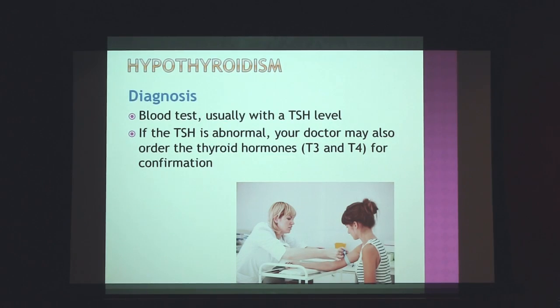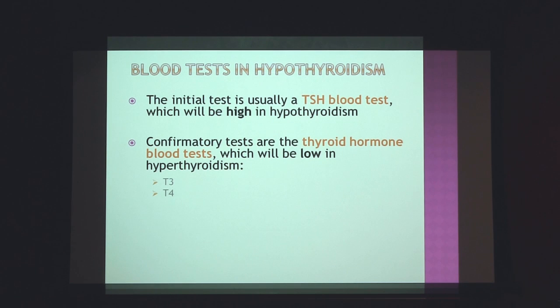How do we diagnose hypothyroidism? We usually recommend a thyroid blood test — a TSH, thyroid stimulating hormone — to begin with. If the TSH is abnormal, your doctor may also order the actual thyroid hormones T3 and T4 for confirmation. If the TSH is high, that is suggestive of hypothyroidism. It's a little ironic: when thyroid hormones are low, the TSH is increased as a result. The confirmatory tests, T3 and T4, would be low.